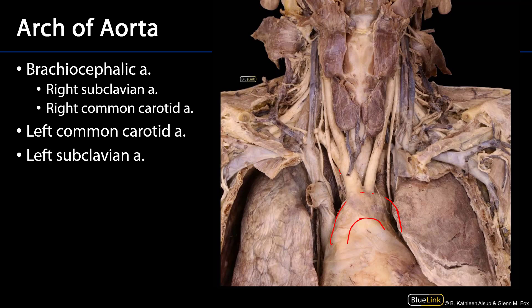The first major branch is the brachiocephalic artery — brachio meaning arm, cephalic meaning head. There are two branches to the brachiocephalic artery. There is the right subclavian artery, which heads out through the root of the neck and will transform itself into the axillary artery and then into the brachial artery, to be discussed later.